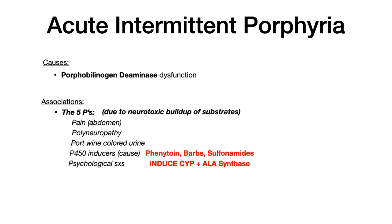So if you give somebody a P450-inducing medication and it induces ALA synthase, that makes acute intermittent porphyria worse. When you see a question mentioning phenytoin, barbiturates, or sulfonamides, it might actually be going after acute intermittent porphyria. The mnemonic: instead of AIP for acute intermittent porphyria, say AIPD — PD stands for porphobilinogen deaminase.